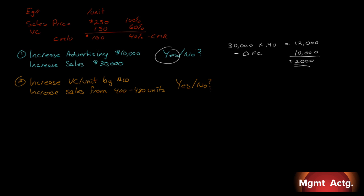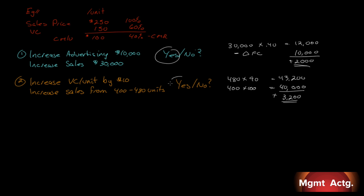We're now going to sell 480 units, and our contribution margin per unit is not going to be $100 anymore because it's costing us an extra $10 — we'll only get $90. So if we multiply that, we get $43,200 as our total contribution margin. We used to sell 400 at $100 contribution margin, which is $40,000. So our contribution margin will increase by $3,200. Yes — do it.